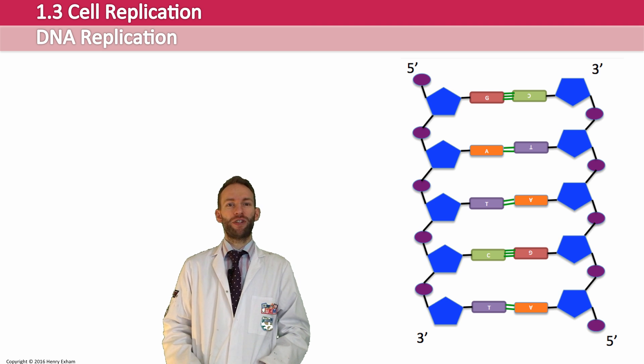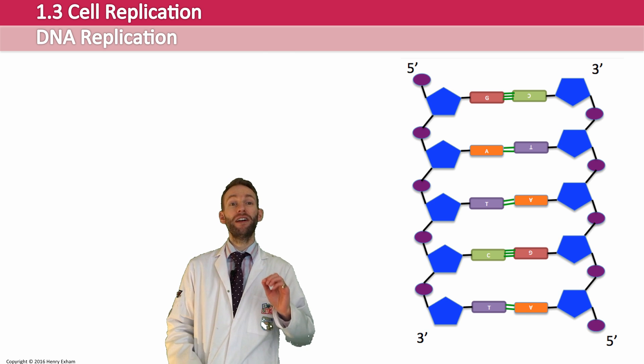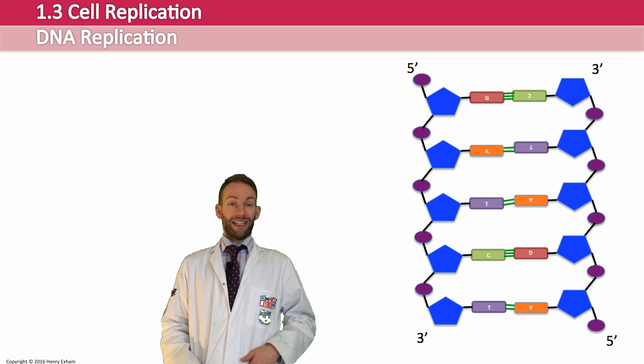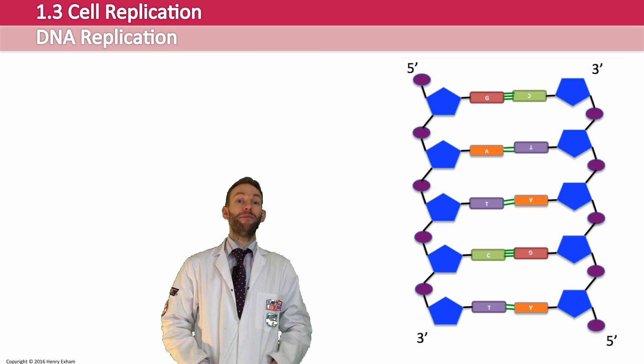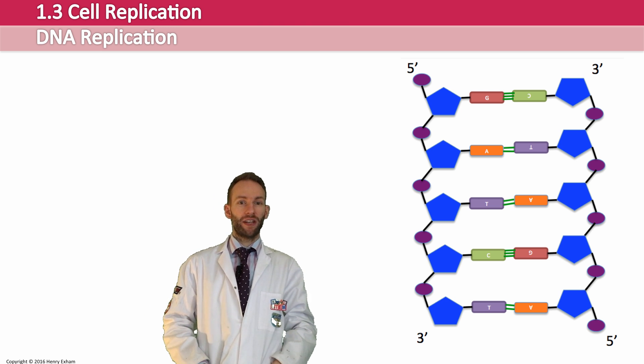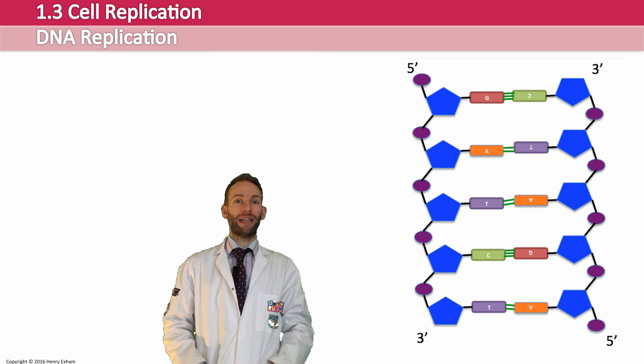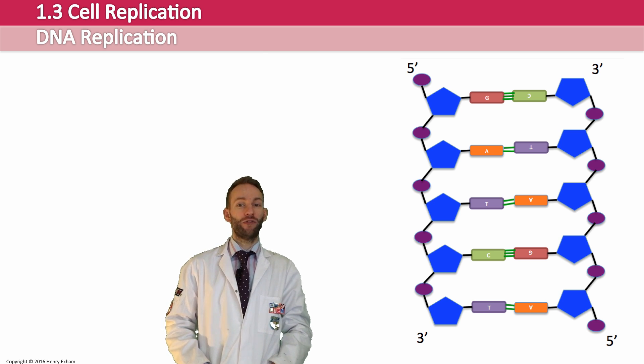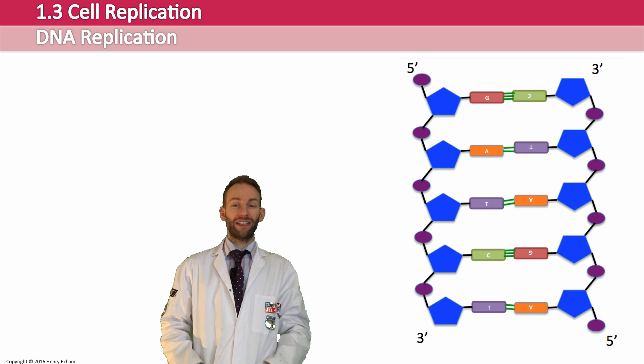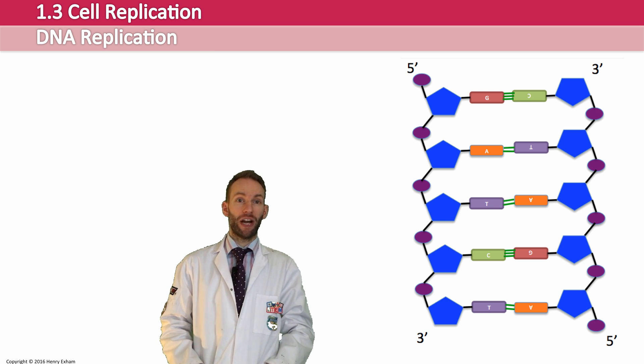So before we think about replicating DNA, we should probably just recap a couple of the key points about its structure. Remember, it's a polymer of nucleotides. They are joined together by phosphodiester bonds. It's a double-stranded molecule. And remember, the strands are anti-parallel. So one goes in one direction, the other one goes in the opposite direction. The bases pair up in complementary base pairing. A's always goes with T's and C's always go with G's. And they are joined together, these bases down the middle, by hydrogen bonds. Two hydrogen bonds between the A and the T and three between the C and the G. And the strands run in a three prime to five prime direction.